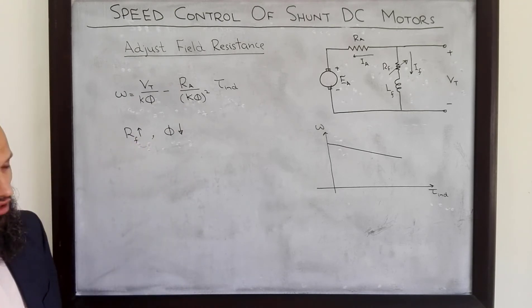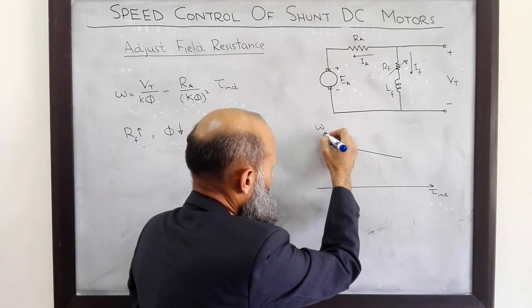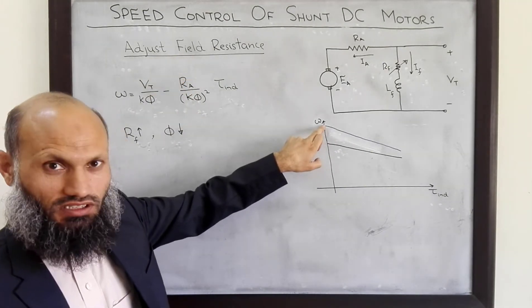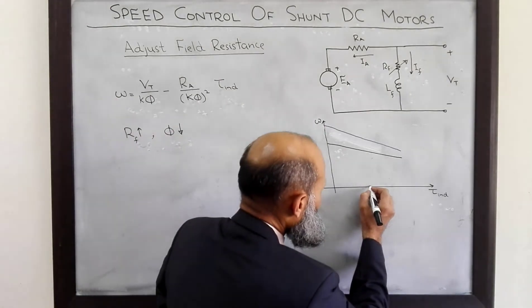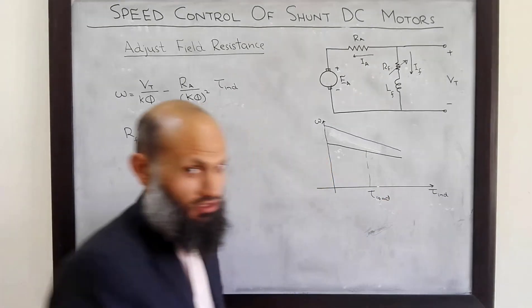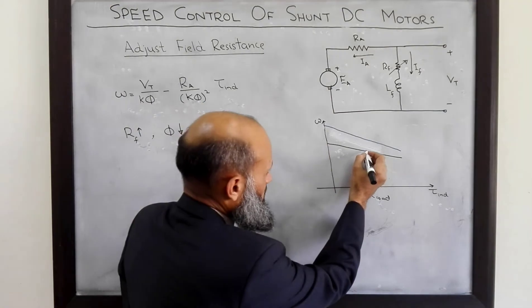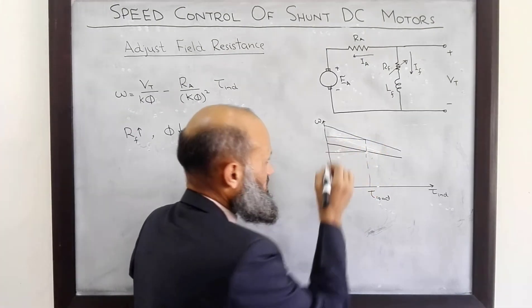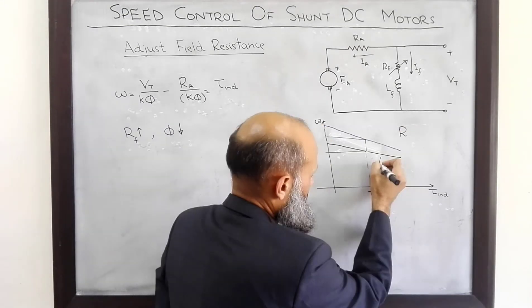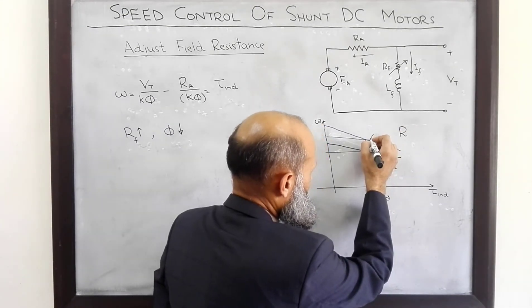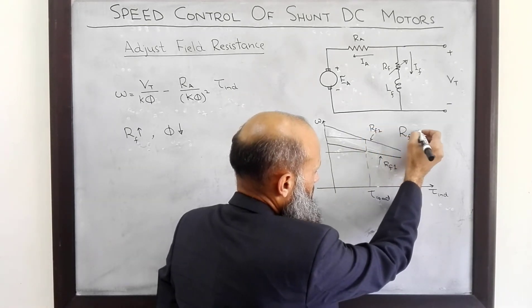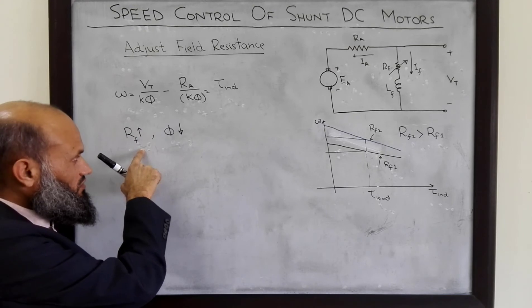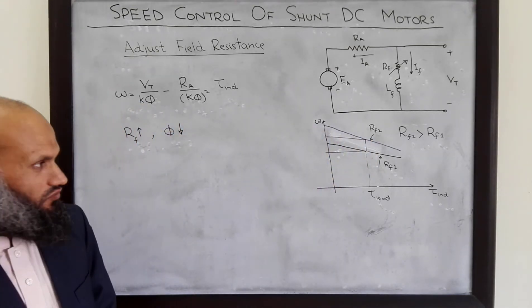With the increase in field resistor, the torque-speed characteristic line becomes steeper. For a given load, if the machine was working at one speed, with the increase in field resistor it will now be working at a higher speed. This line corresponds to RF1 and the steeper line corresponds to RF2, where RF2 is greater than RF1. Therefore, we can increase the field resistor to increase the speed of the motor for a given load.